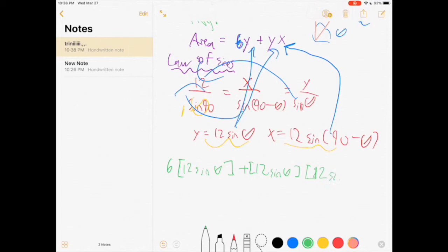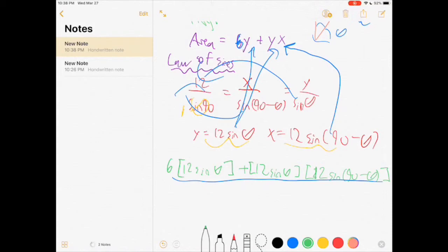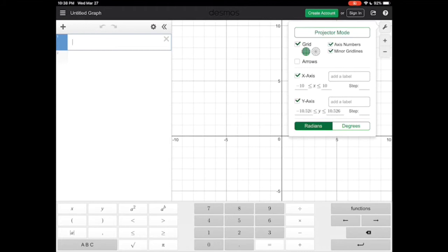Now we have written our little area formula into one variable, so try finding the maximum value of this. Going into Desmos, we are going to type this out. First, we need to put this in degrees, because this is what we are in.